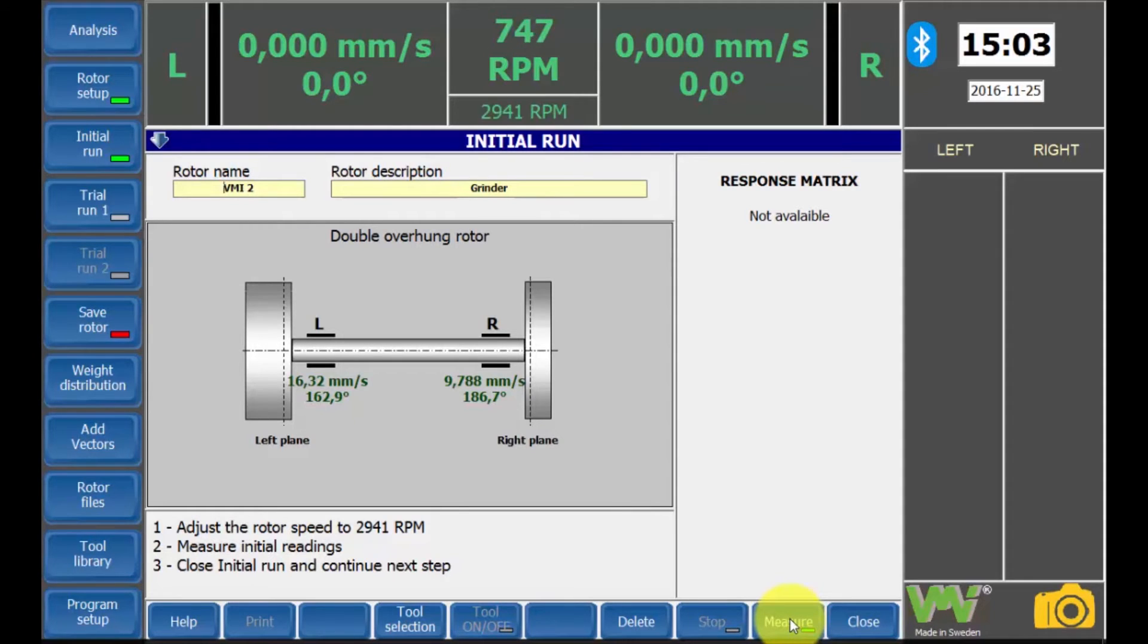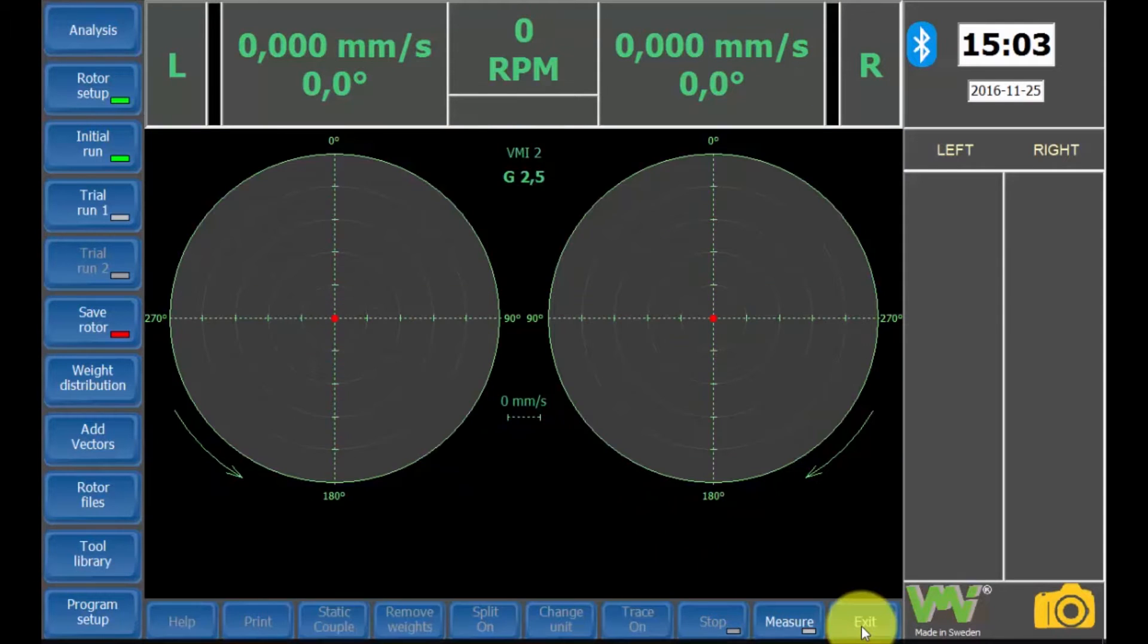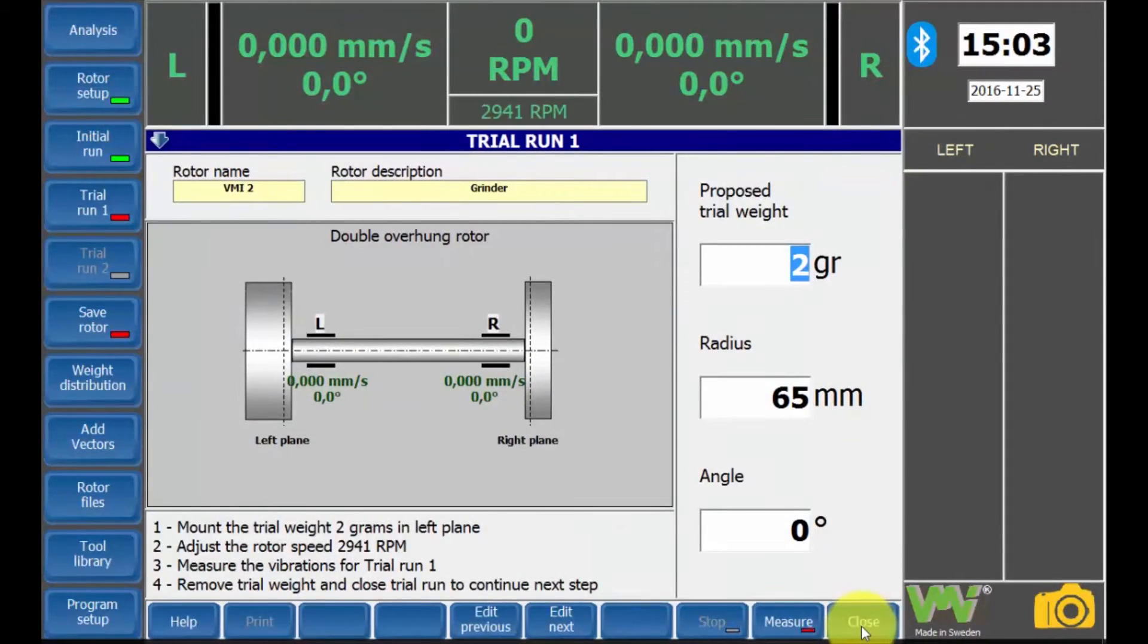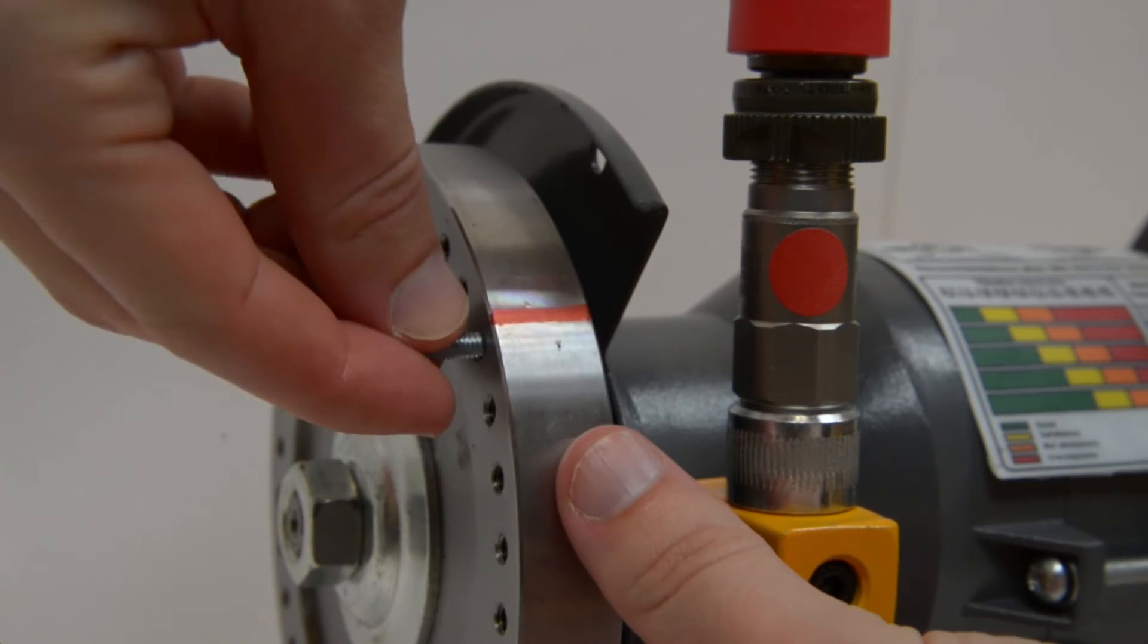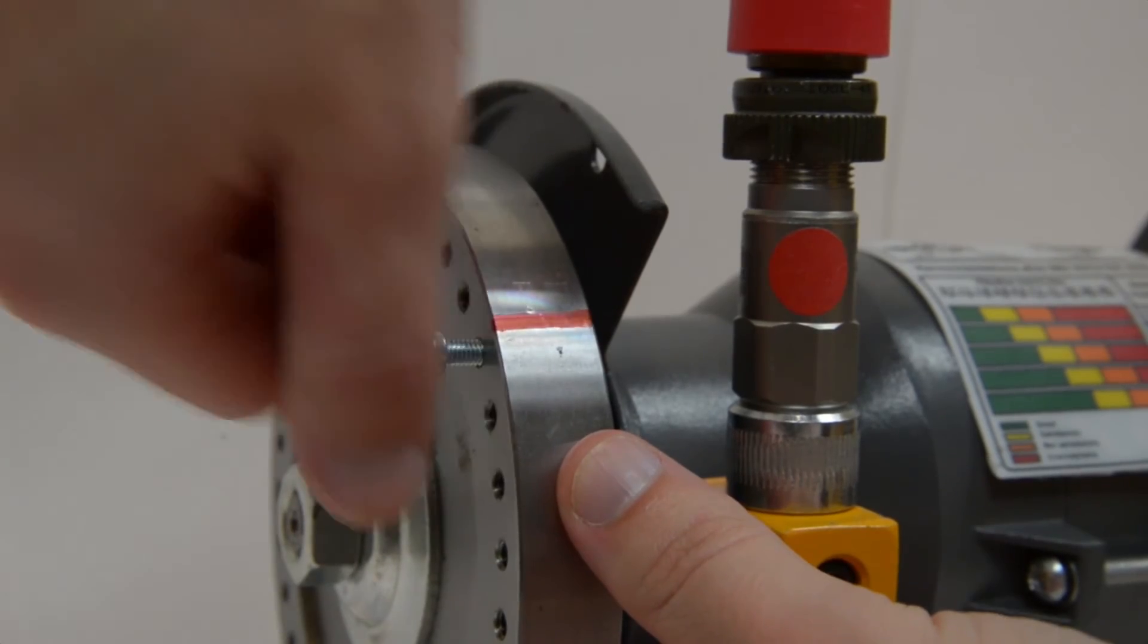The initial run is now complete and it's time for the first trial run. Press the close button. As you can see, the trial 1 screen opened up automatically. And this is because the step-by-step automatic option is activated. If it's not, press the trial 1 screen. Here you can enter the proposed trial weight. For this example, we will have a trial weight of 3 grams, which is placed on the left side of the rotor at zero degrees.